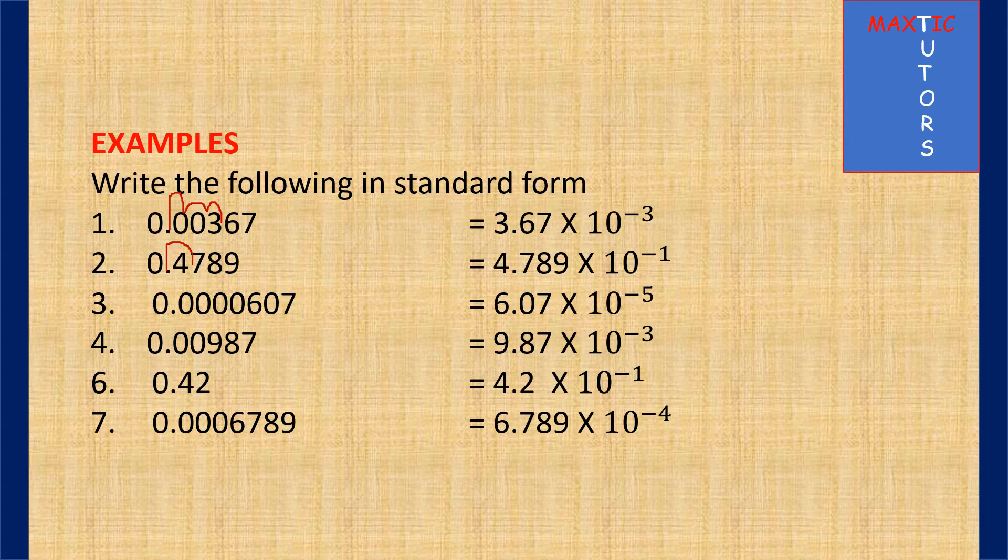The same goes for number 3. For you to have a number between 1 and 10, that number must be 6.07. We need to shift the decimal 5 times to the right, and that's why you have 10 raised to the power minus 5. You can also go ahead and do the remaining ones.